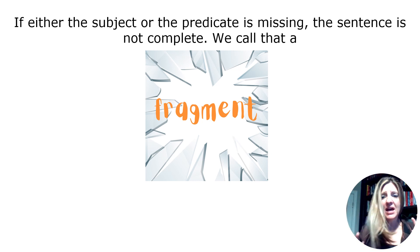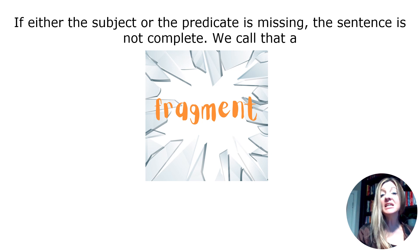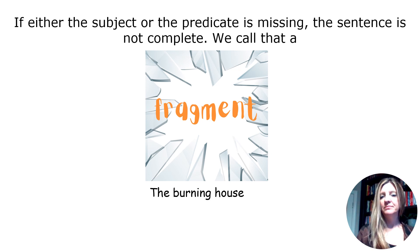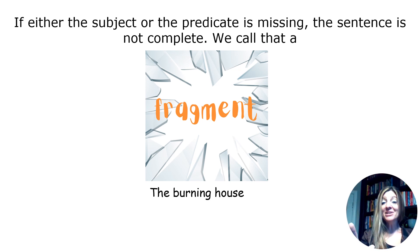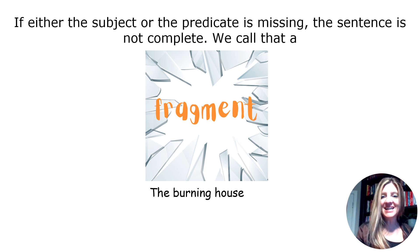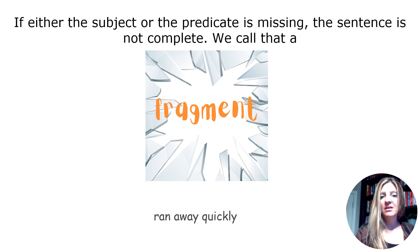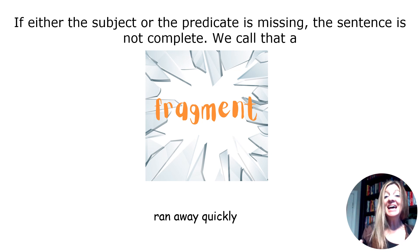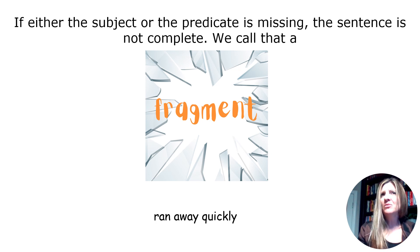I usually do a little vocabulary lesson here and talk about what fragments are and how things can be fragmented. 'The burning house.' What about the burning house? Kids start filling it in for you — they actually start making it a complete sentence. That sentence has a subject but it doesn't tell us what about the burning house. How about this one? 'Ran away quickly.' The kids ask, who ran away quickly? Exactly — it has a predicate but it's missing a subject, and we're really left with this fragmented idea.